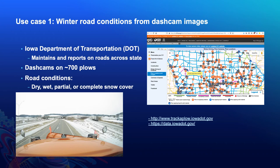The first use case is an ongoing project we're working on with the Iowa Department of Transportation. Iowa DOT is responsible for thousands and thousands of miles of roads. They have a sizable budget for winter road maintenance tasks such as salting and plowing in order to prevent accidents. They collect and report data on road conditions around the state during the winter — whether the roads are passable or covered by snow. Their fleet of approximately 700 snowplows are equipped with dashcams that take pictures of the roadway at regular intervals and upload them to the cloud.